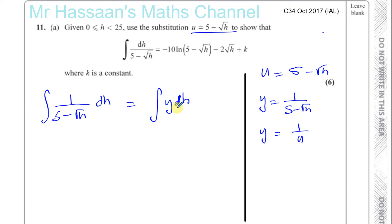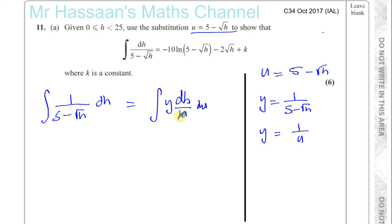What we're going to do is write dh as (dh/du) du, so the integral becomes the integral of y times (dh/du) with respect to u. Now I need to find y in terms of u — that's one over u — and also find dh/du in terms of u, so I can integrate everything with respect to u.